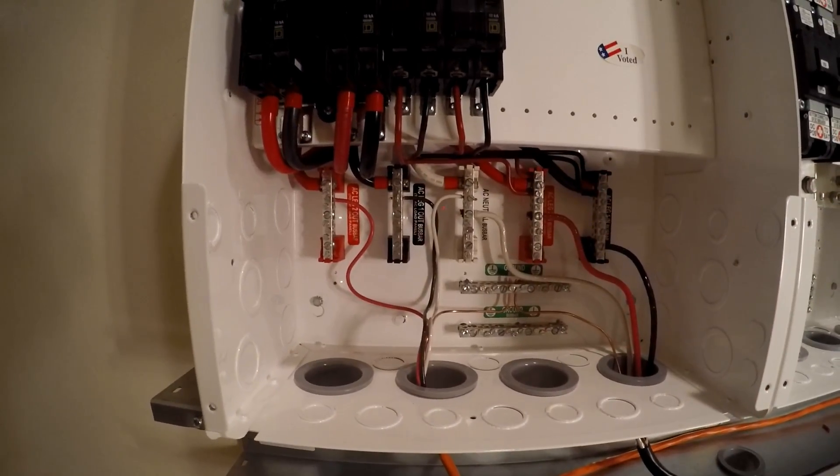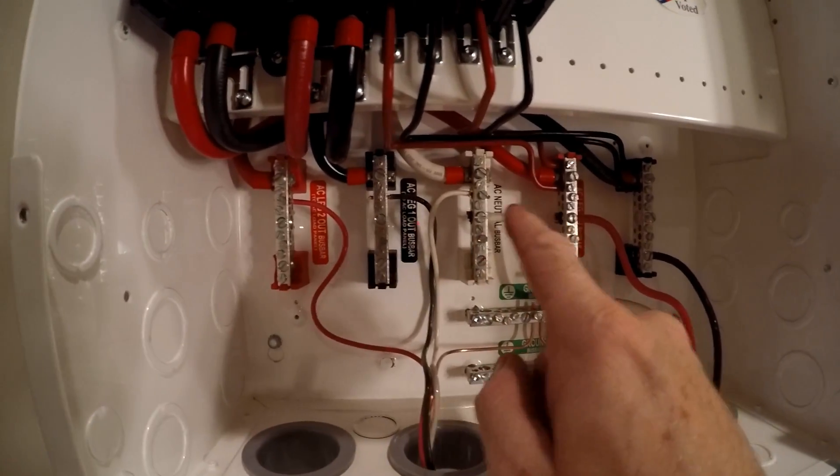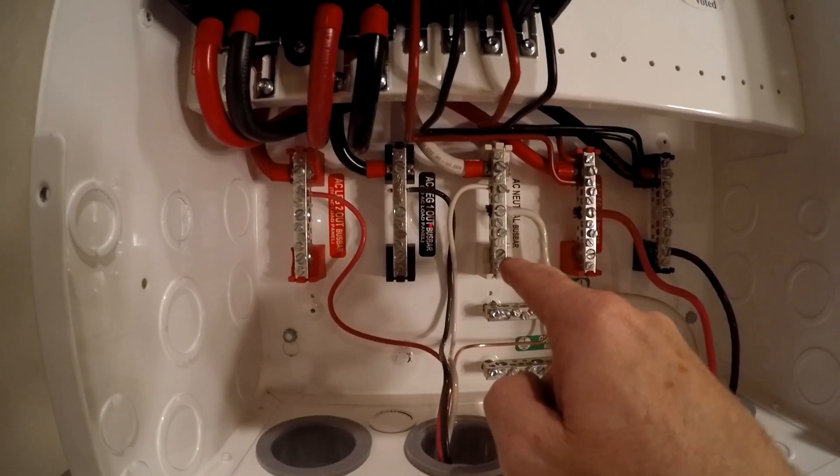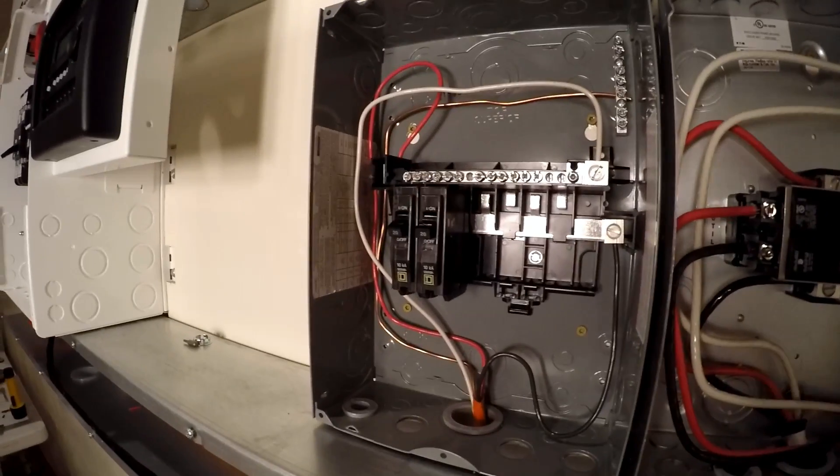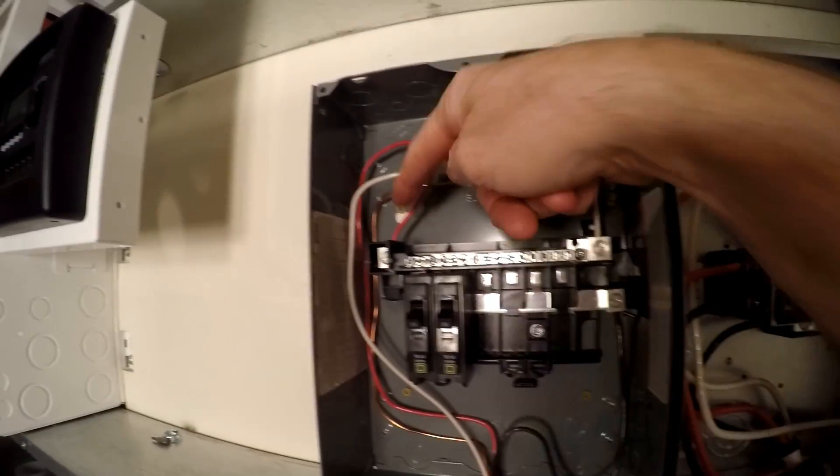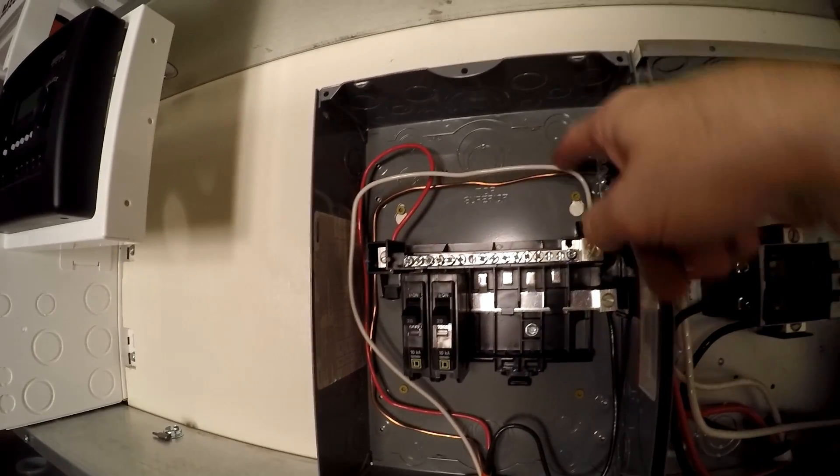So we just hooked up the output, the AC output secondary. I've got my leg one, leg two, neutral, ground. It's down through here, orange wire, up into my secondary output panel. I've got leg one, leg two, neutral, and ground.